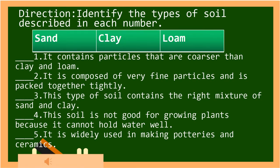Question number one: it contains particles that are coarser than clay and loam. Number two: it is composed of very fine particles and is packed together tightly. Number three: this type of soil contains the right mixture of sand and clay. Number four: this soil is not good for growing plants because it cannot hold water well. Number five: it is widely used in making potteries and ceramics.